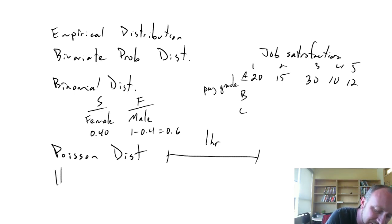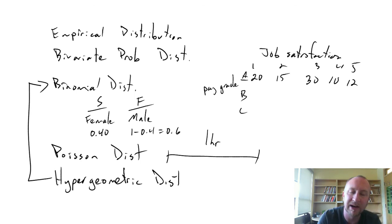The last one is the hypergeometric distribution. This one is very much related to the binomial probability distribution, with one major exception. In the hypergeometric probability distribution, events are no longer independent. So if in one period we experience a success, that has an impact on the probability of seeing a success in subsequent trials.